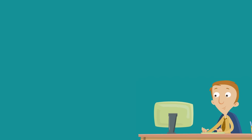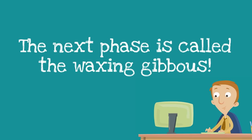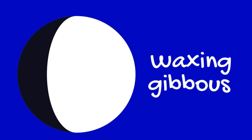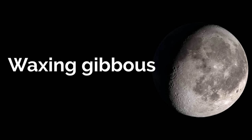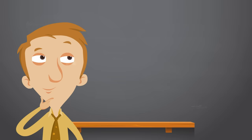We are ready for the next phase. The next phase is called the waxing gibbous. A waxing gibbous is more than half lit, but not quite fully lit. It is the fourth phase of the moon. A waxing gibbous is more than half lit, and like all of the waxing moons, is lit on the right side. Here is a photograph of a waxing gibbous. The cool thing about a waxing gibbous moon is that when you see it, you know a full moon is on its way.